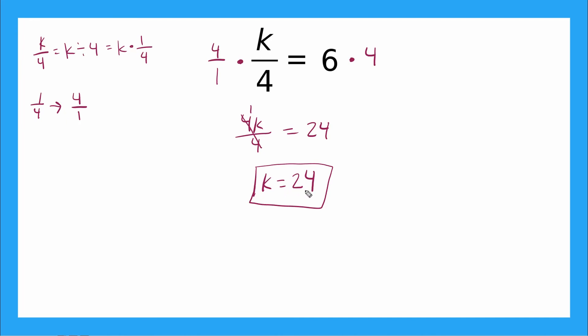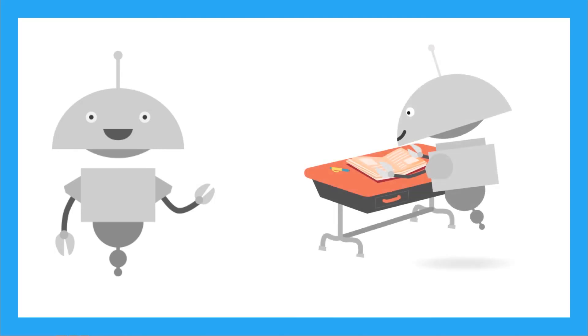Let's check with substitution. Wherever I see a K in my original equation, I plug in 24. So I have 24 over four equals six — same as division, so 24 divided by four is six, which equals six. This checks out, we did it right. Great work learning to solve one-step multiplication and division equations — you totally crushed it. Now it's time for you to practice on your own. Have fun and remember to always be clever.